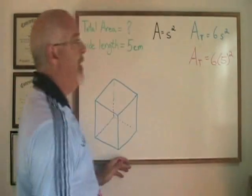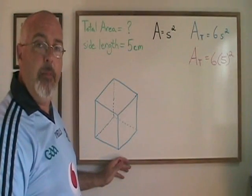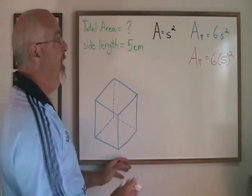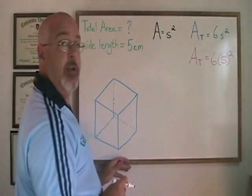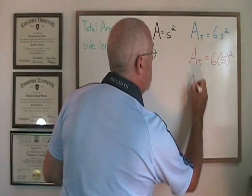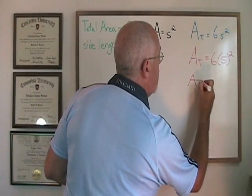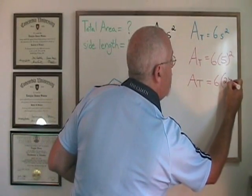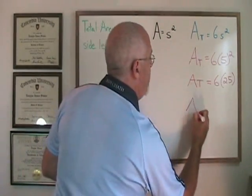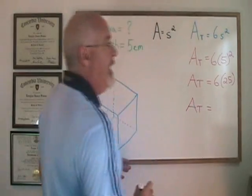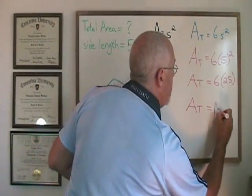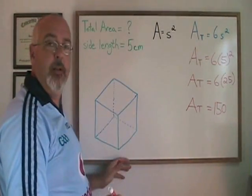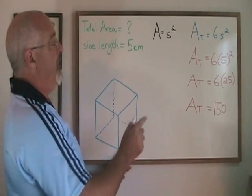The s is replaced by a five. Remember your rule of BEDMAS that exponents must be done before multiplication, so do not multiply six by five first. Square the five first. Five squared is 25 and six times 25 is 150. Because we were dealing with centimeters as our measure of distance, the area unit will be centimeters squared.